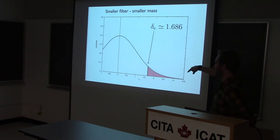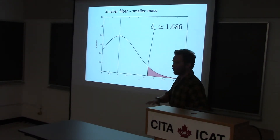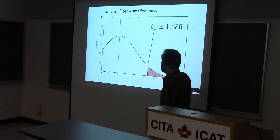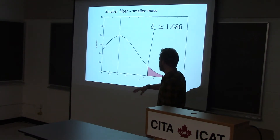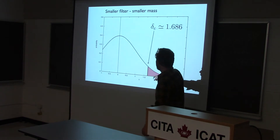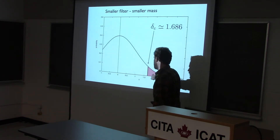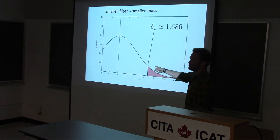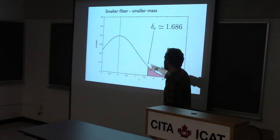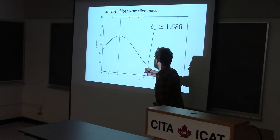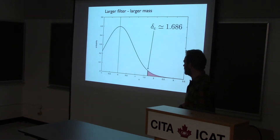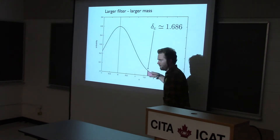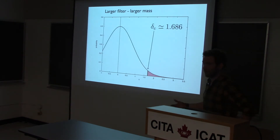Another way is the friends-of-friends method. For mass function calculations, one popular approach is to assume the linear density field exists for all time and we know its statistics are Gaussian. If we smooth the density field with a particular filter, the densities will form a Gaussian distribution. We equate all of that Gaussian that's passed the critical number 1.686 with halos corresponding to the filter used to smooth. So we smooth with a filter containing some mass, note how much density exceeds 1.686, and say that fraction of density is in halos above that mass. This gives a pretty good guess at what the mass function of dark matter halos looks like, though it's only roughly correct in detail compared to N-body simulations.